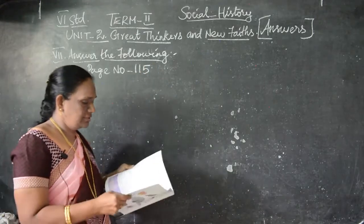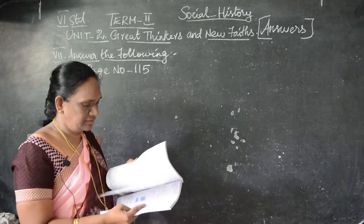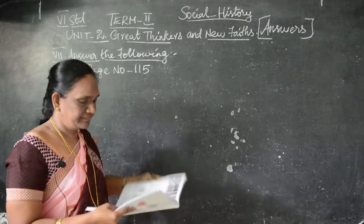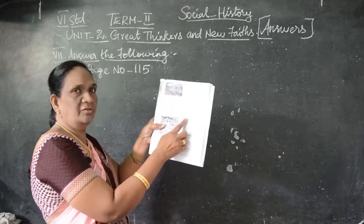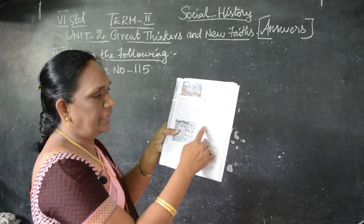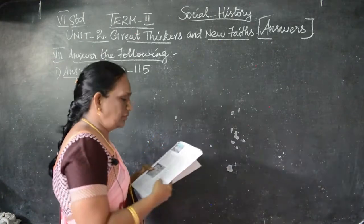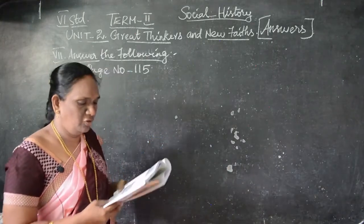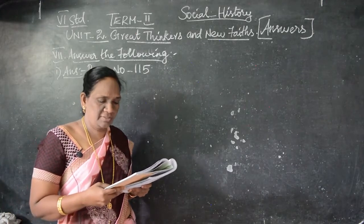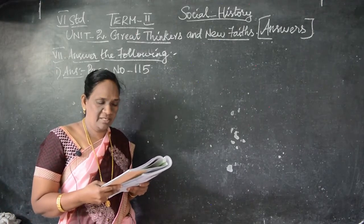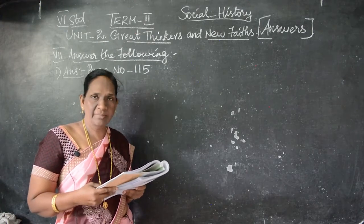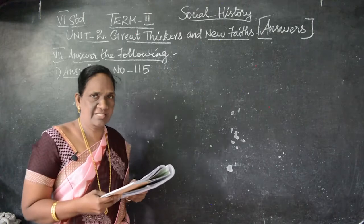Take page number 115. Here you have the 8-fold path. I will read it out: Right view, right thought, right speech, right action, right livelihood, right effort, right knowledge, and right meditation. That is the first answer.